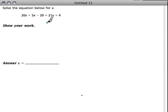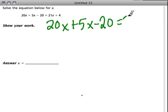For x in this equation, I'm going to write it larger: 20x plus 5x minus 20 equals 21x plus 4.